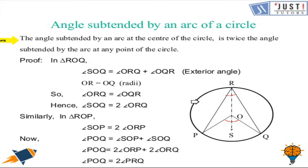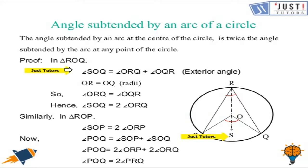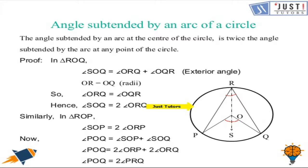Now let's see how we can prove that. We will do a small construction by joining a radius from O to R and extending it slightly to S. In triangle ROQ, angle SOQ is an exterior angle, so it will be equal to the sum of interior opposite angles, which means angle ORQ plus angle OQR. Since OR equals OQ, it becomes an isosceles triangle, so angle ORQ equals angle OQR. Therefore angle SOQ becomes twice of angle ORQ.